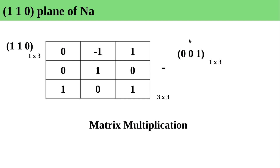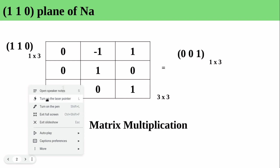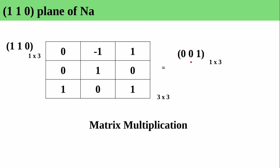The final direction you can see is [001], which means this plane will elongate along the z-axis only — one unit along the z-axis. This multiplication follows the standard matrix multiplication rule.